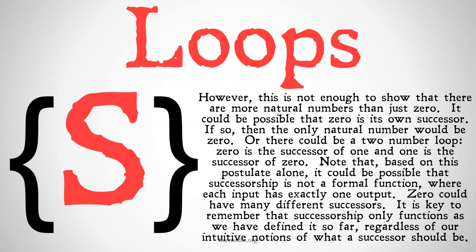It could be a relation, where many numbers have relationships between each other and we don't always get the same output for a given input. Zero could have many different successors. It is key to remember that successorship only functions as we have defined it so far, regardless of our intuitive notions of what a successor should be. We're going to get to those definitions throughout these postulates and with our set-theoretic definitions of successorship, but we're not there yet — which is why we need those other postulates.